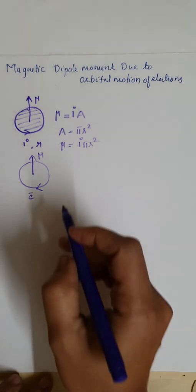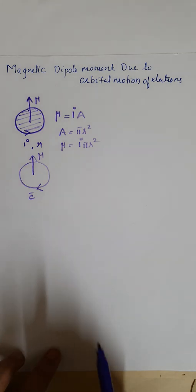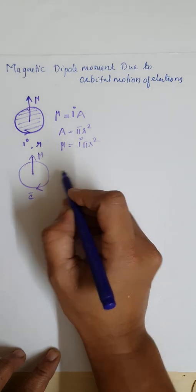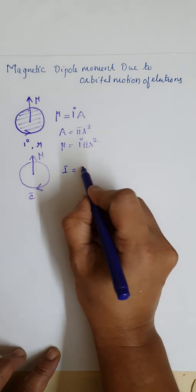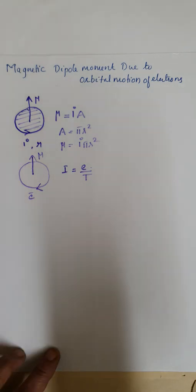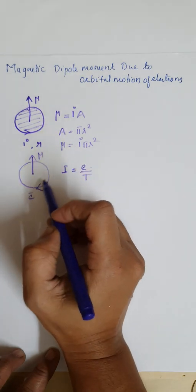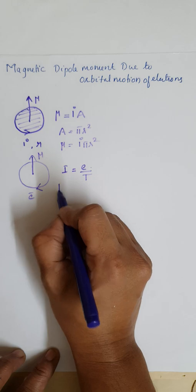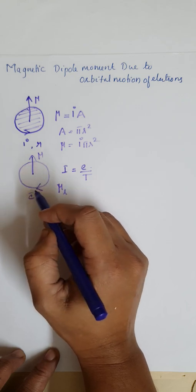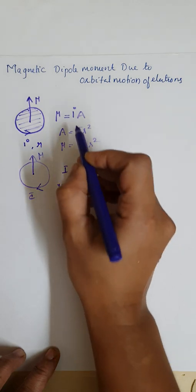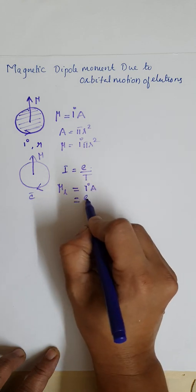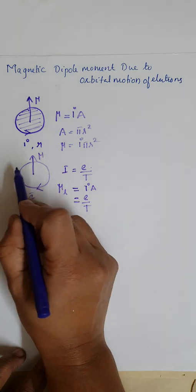Let E be the charge of the electron, and if this electron crosses any point 1/T times in unit time, then the current induced by this electron can be represented as I equal to the charge of the electron divided by the time period T. The magnetic moment induced due to the orbital motion can be represented as mu L, equal to this current E/T into the area of this orbit.